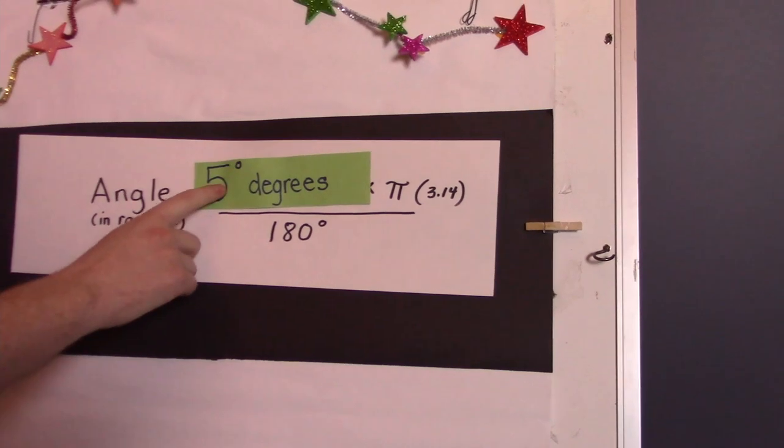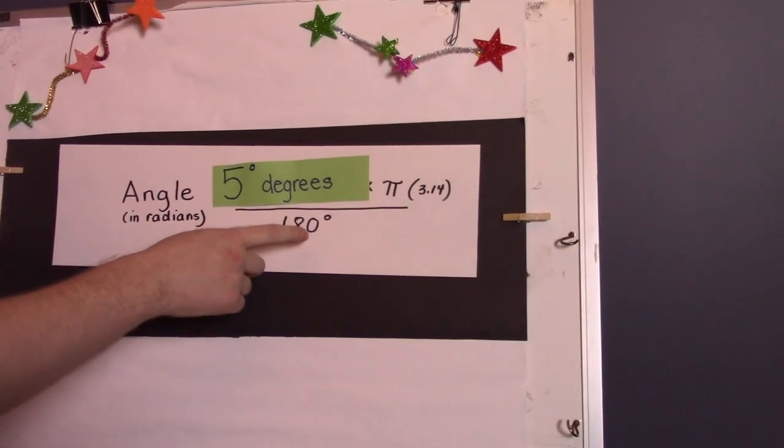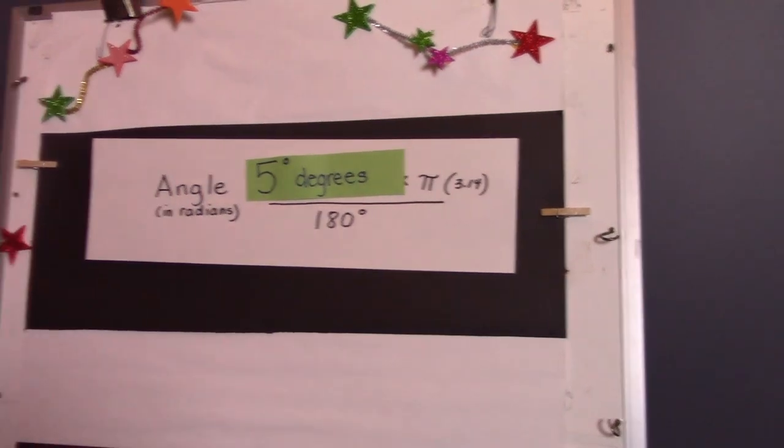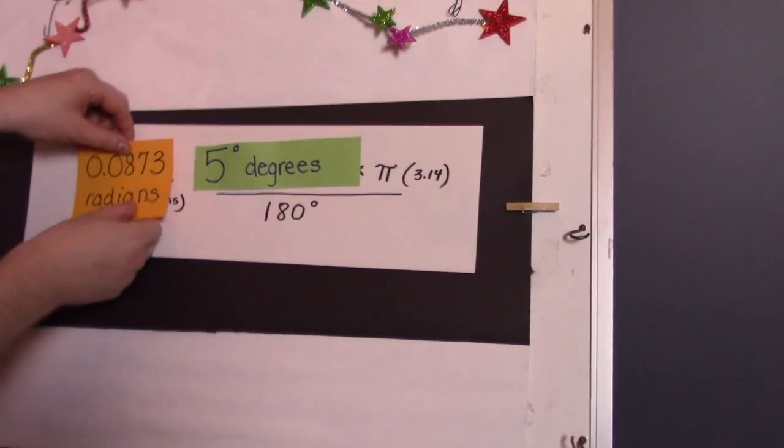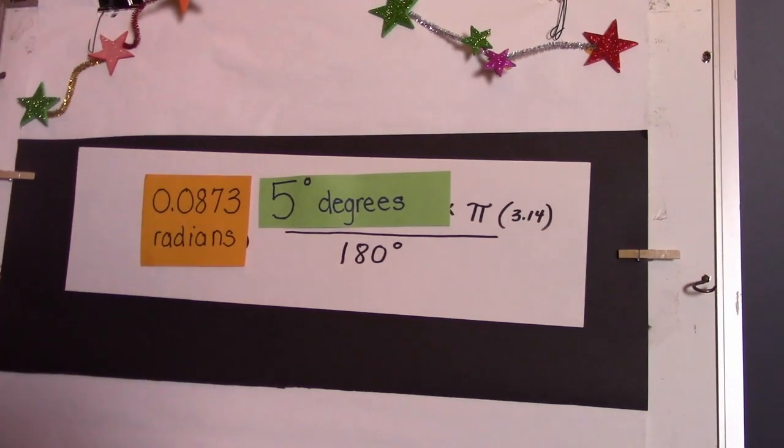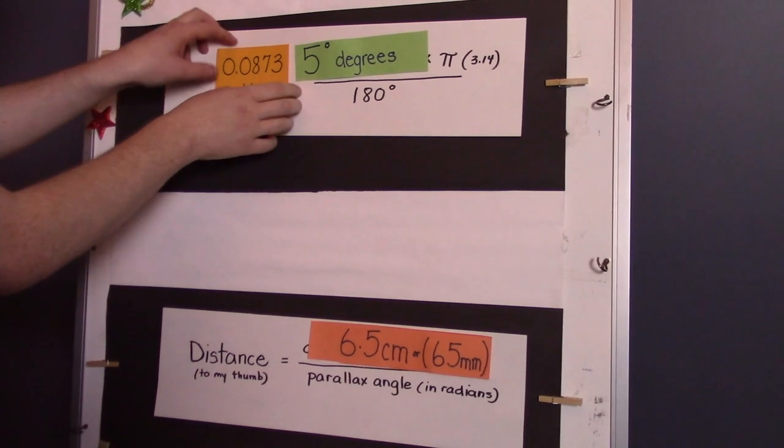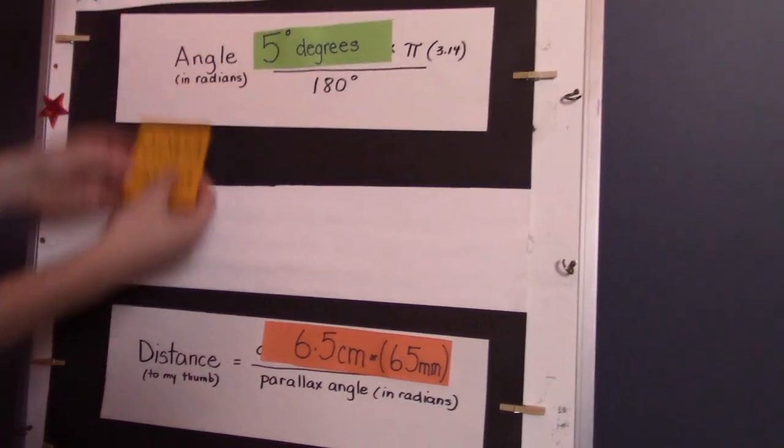And we'll take 5 degrees multiplied by pi divided by 180 and I've done this calculation and I got 0.0873 radians. So now all we have to do is take this number and plug it into our parallax formula.